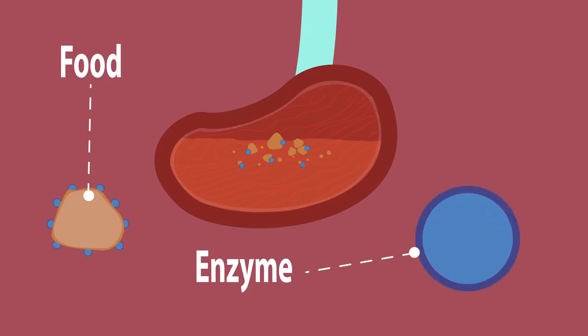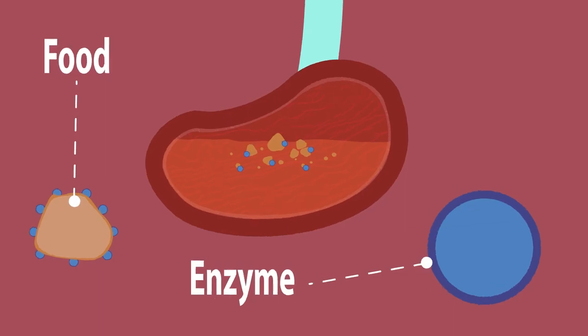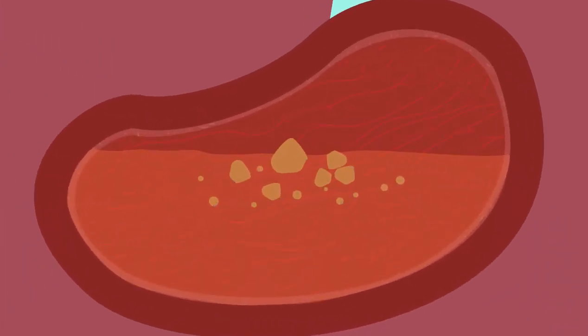Now let's fast forward to our stomach. Our chewed up, stomach-churned food has a large surface area and is mixed with the stomach's gastric juices.